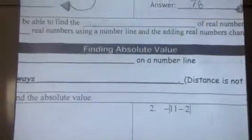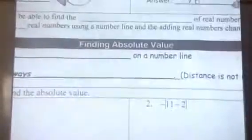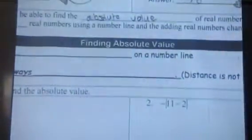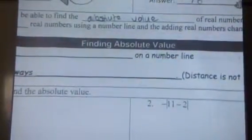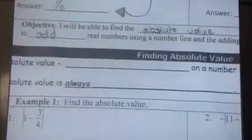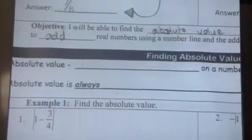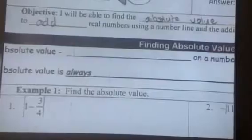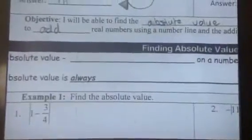We are in lesson 5. Our objective for today is: I will be able to find the absolute value of real numbers, and I will be able to add real numbers using a number line and the adding numbers chant, which we will learn in just a minute.